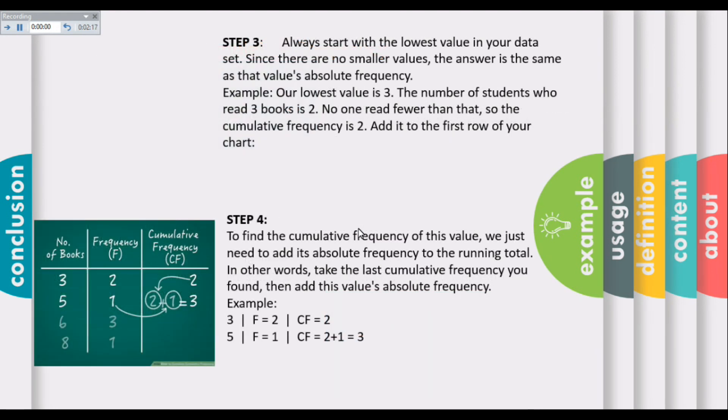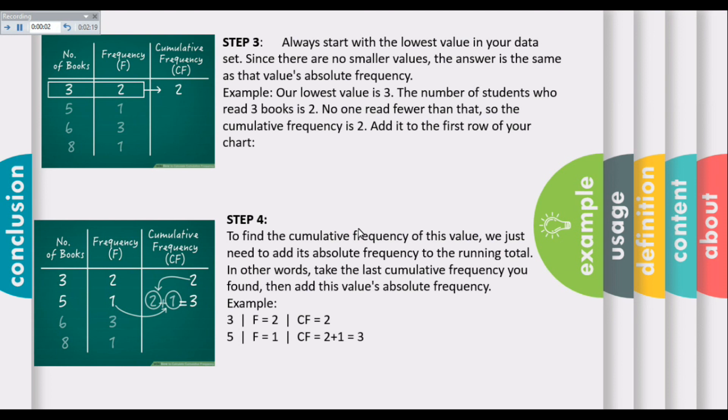Step 3: Always start with the lowest value in your data set. Since there are no smaller values, the answer is the same as that value's absolute frequency. As our lowest value is three, the number of students who read three books is two. No one read less than that, so the cumulative frequency is two.